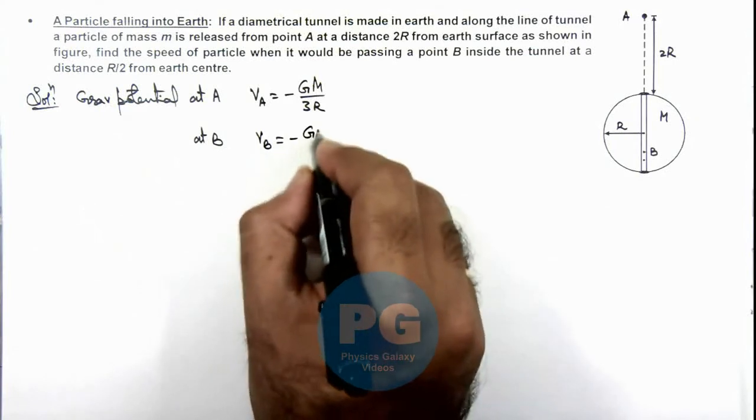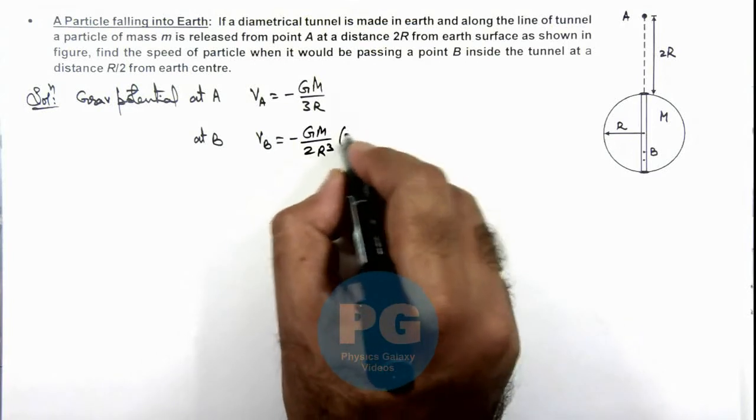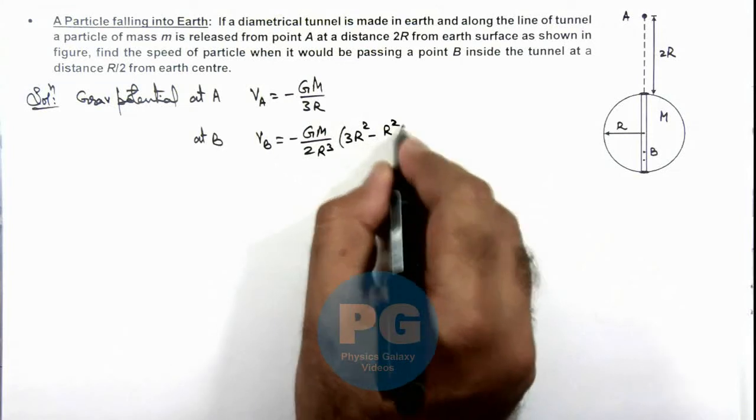Minus GM by 2R³ multiplied by 3R² minus the distance square which is R² by 4.